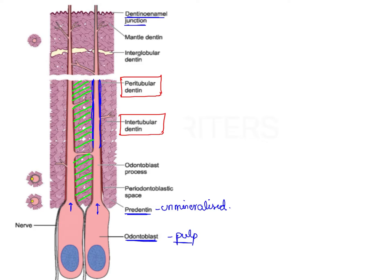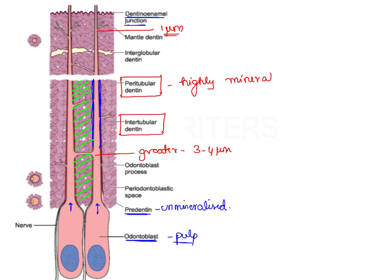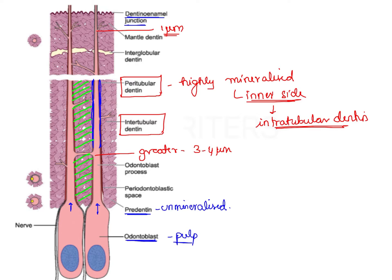The dentinal tubule diameter is greater towards the pulpal end — about three to four micrometers — whereas towards the dentino-enamel junction it is very thin, about one micrometer. This decrease in diameter is because of the surrounding peritubular dentin, which is highly mineralized and deposits minerals on the inner side of the dentinal tubule. Because peritubular dentin is thicker towards the periphery, the tubule diameter is smaller there. Due to this property, peritubular dentin is also known as intratubular dentin.